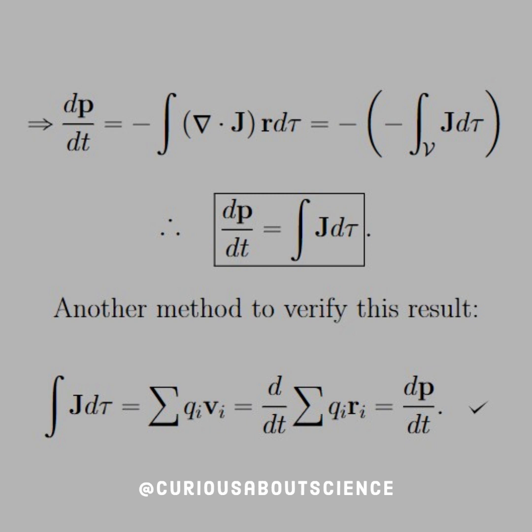Another method to verify this result is simply use the definition that we had already discovered of what the current density is. So if we're integrating the current density, that's just equal to the infinite sum of all the charges times their velocities. But what is the velocity but the time derivative of position? So we factor, so we rewrite that in terms of d/dt with r, and then, but what is qi times ri, but the dipole moment? It's fascinating how these things tie back together.